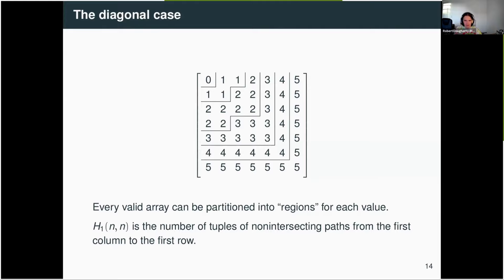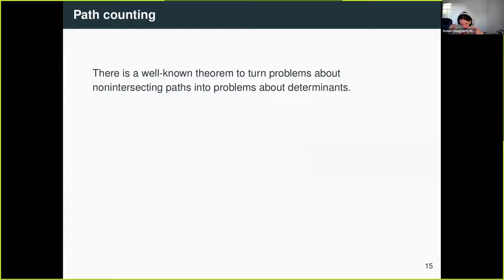This is a reduction. We started off with these funny rules, and then you can reduce it down to counting non-intersecting lattice paths, which is a lot more familiar than trying to think about king moves and things along that line. It is great that we want to talk about counting non-intersecting lattice paths, because there's a pretty well-known theorem that can turn non-intersecting lattice path questions into questions about determinants — it's hard to count non-intersecting lattice paths, but it's very easy to compute determinants.